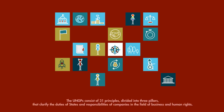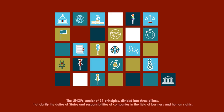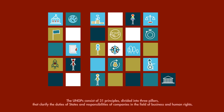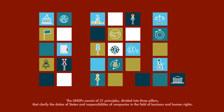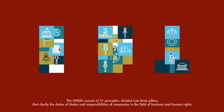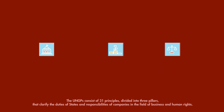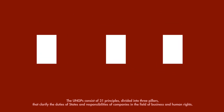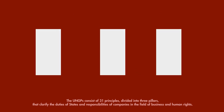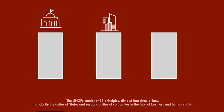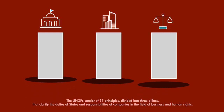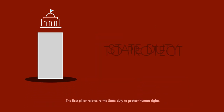The UNGPs consist of 31 principles divided into three pillars that clarify the duties of states and responsibilities of companies in the field of business and human rights.